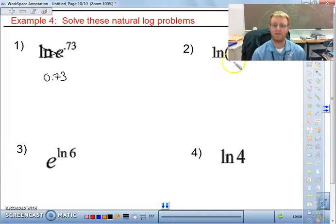Over here, we have ln of negative 5. Same properties apply. We can't have a negative. So this is undefined.